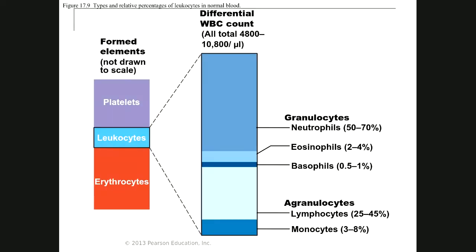Here you can see the formed elements in our blood. We have erythrocyte, leukocyte, and platelet. Based on their weight, they are organized in the test tube. When we centrifuge our test tube, you can see that the erythrocytes are the heaviest — they are located at the bottom. After that, we have leukocytes, and then we have platelets.